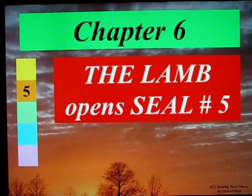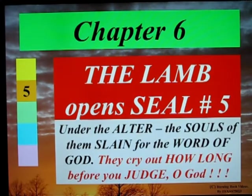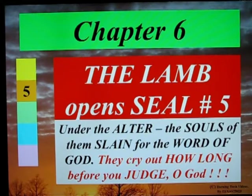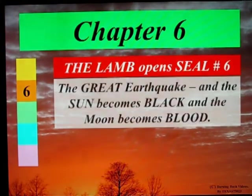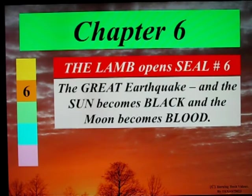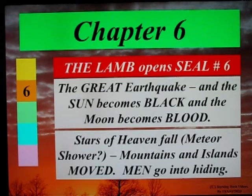The Lamb opens seal number 5. Under the altar, the souls of them slain for the word of God cry out: 'How long before you judge, O God?' Then the Lamb opens seal number 6 — the great earthquake — and the sun becomes black and the moon becomes blood. Stars of heaven fall — maybe a meteor shower? Mountains and islands are moved, and men go into hiding.